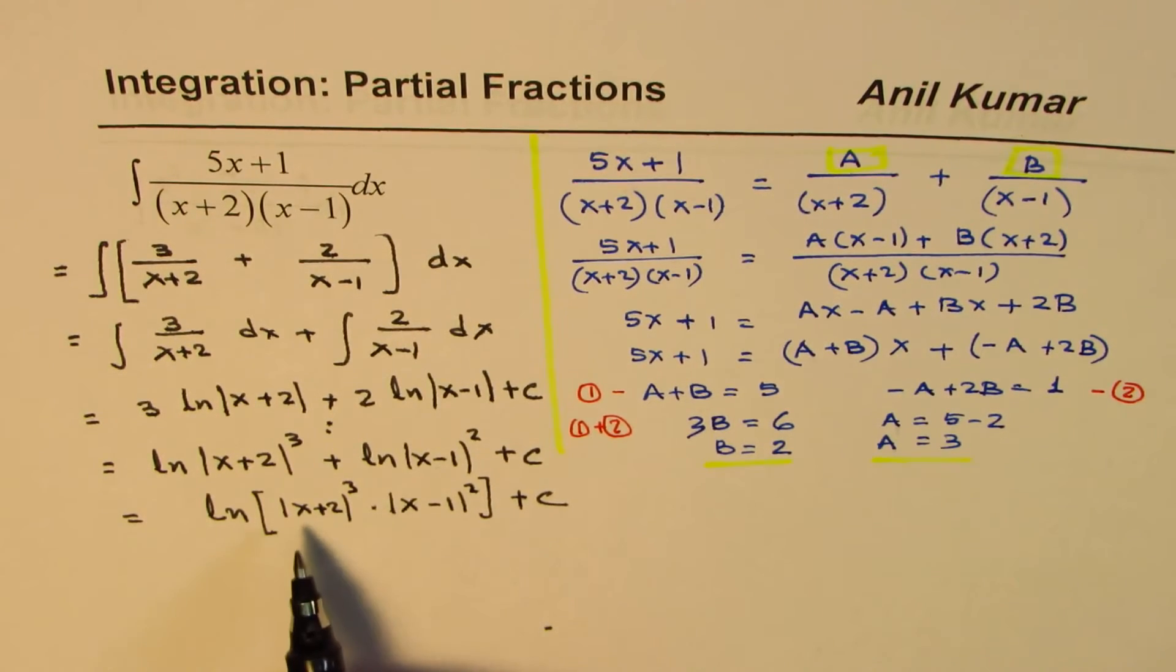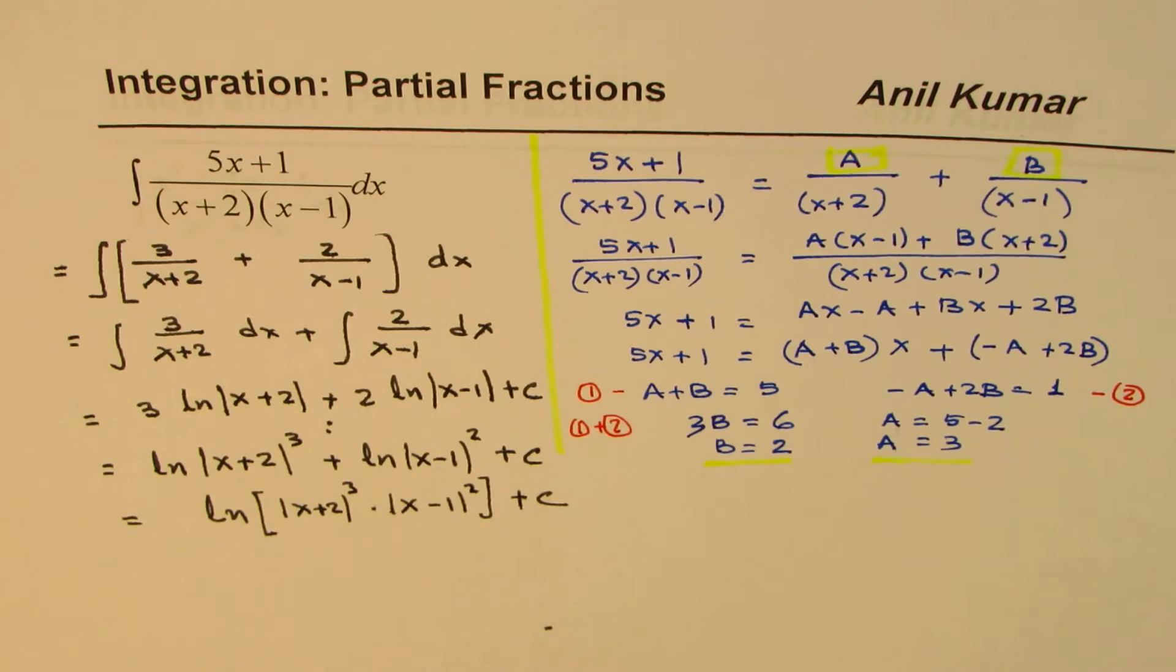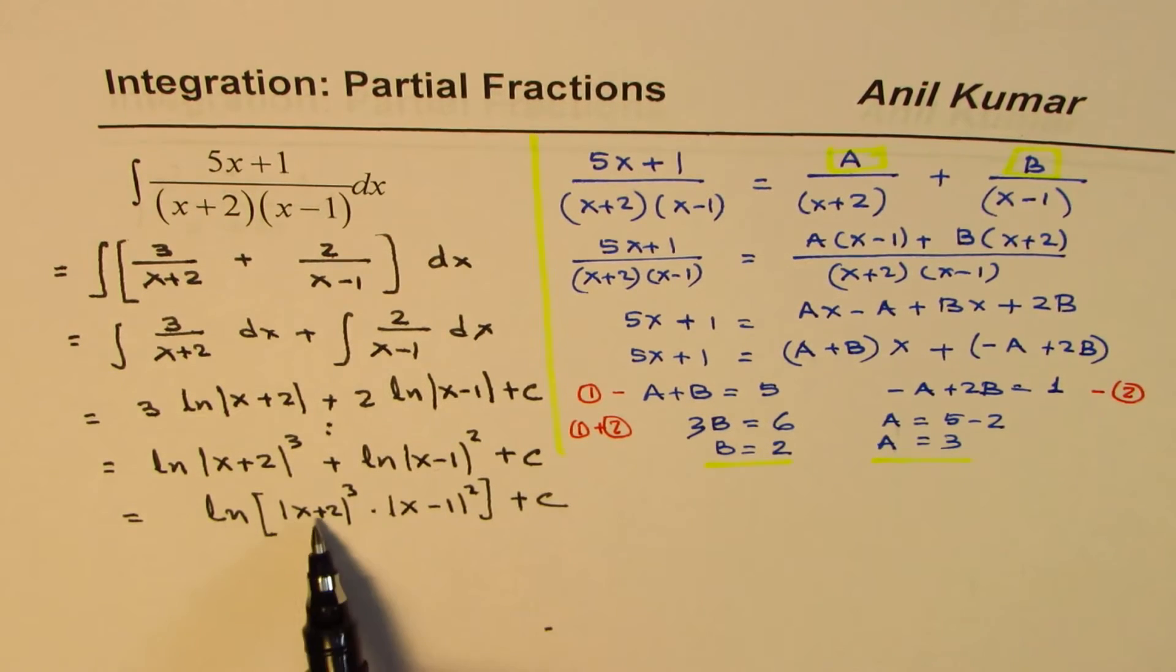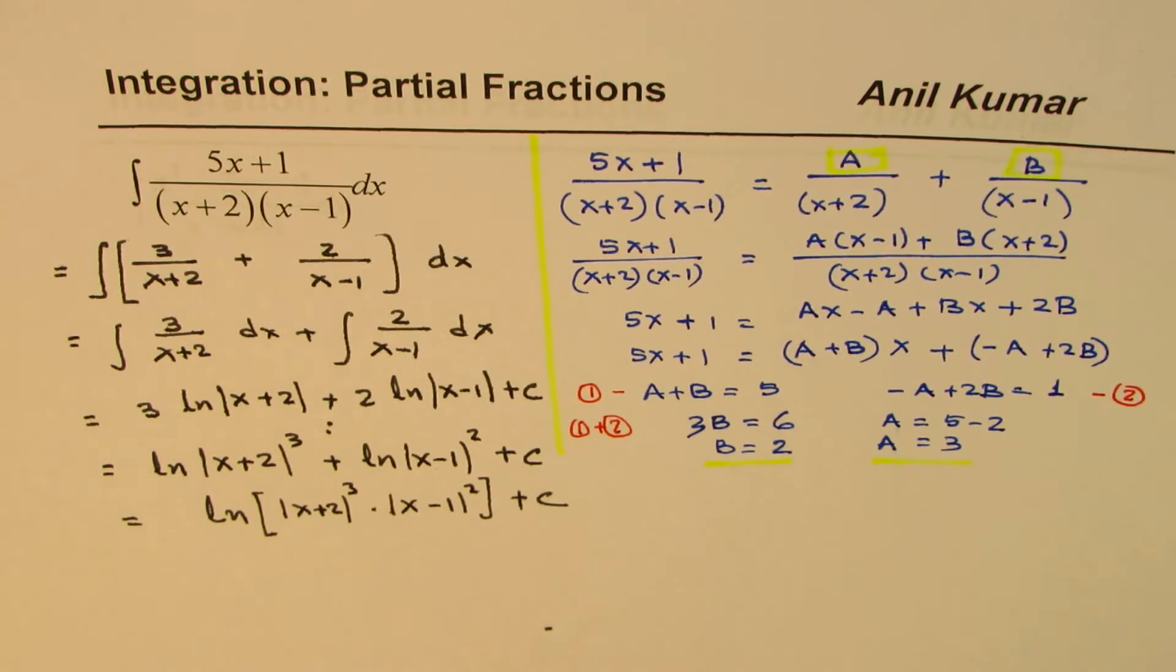So you could do that, and at times you could expand and do a lot more. But this is enough. Now ln, the domain of ln is always non-negative, greater than 0. And therefore, this absolute value is very important.